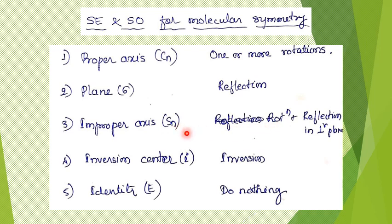There is one more symmetry element: the inversion center, indicated by i. This is an imaginary center present in the molecule taken as a symmetry element. From that central point, all parts of the molecule get inverted — this inversion is the operation performed on inversion center i.